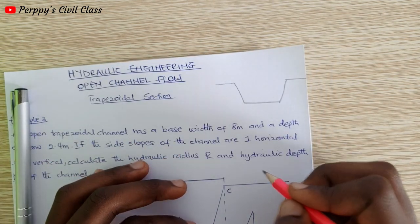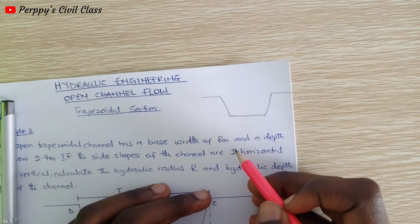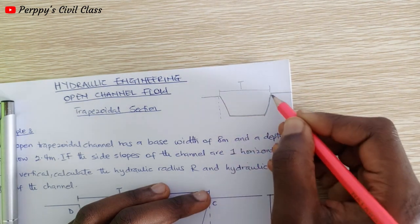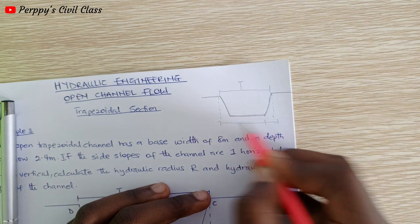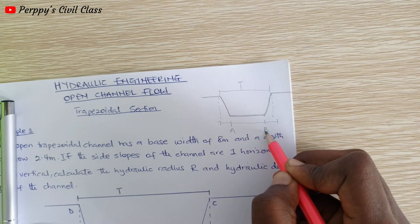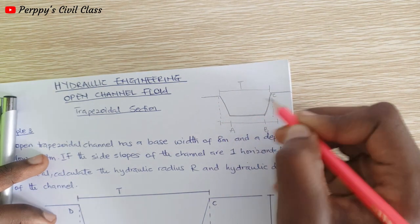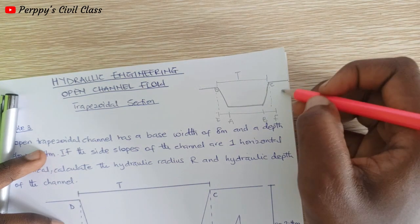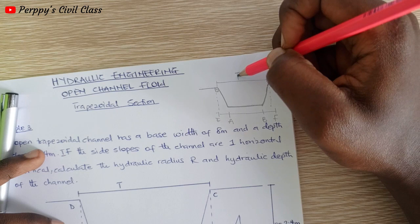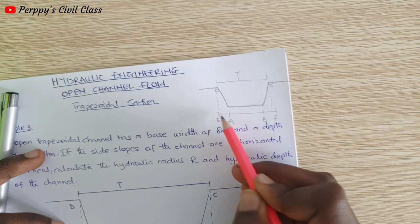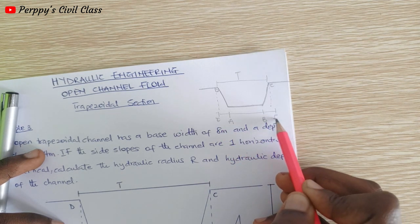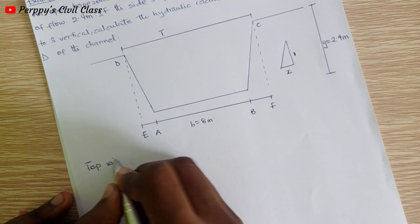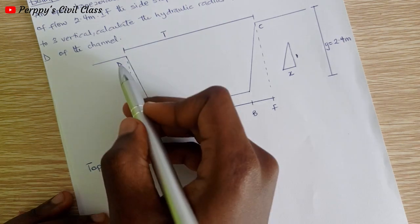Let's set up the trapezoidal section with a top width T. We have a rectangular base with points A and B at the bottom, and C and D at the top. We add points E on the left side and F on the right side. To get our top width, we need to add the segments: E-A plus A-B plus B-F, which gives us the full top width DC.